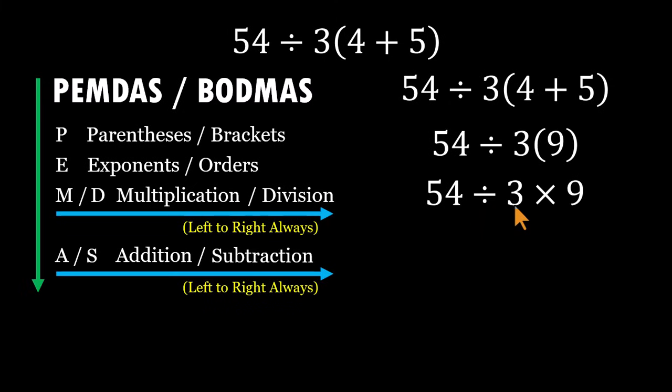So starting from the left, 54 divided by 3 equals 18. Bring down the 9. 18 times 9 equals 162. That makes the correct answer 162, not 2.